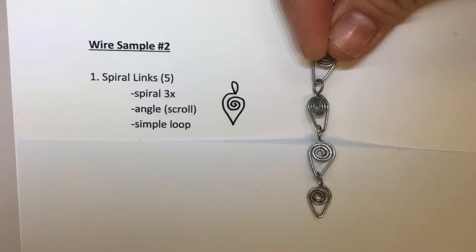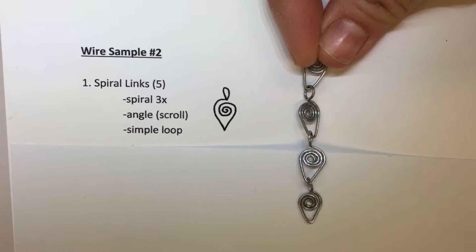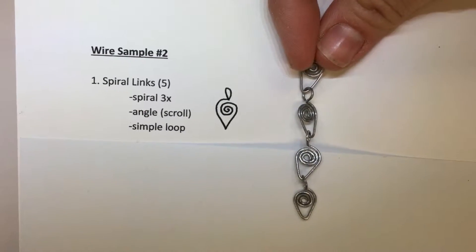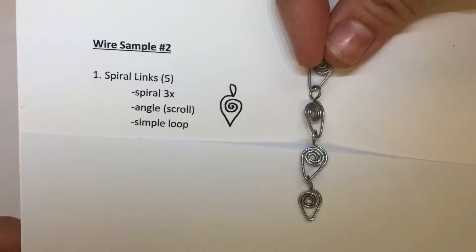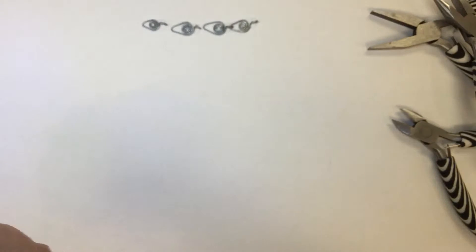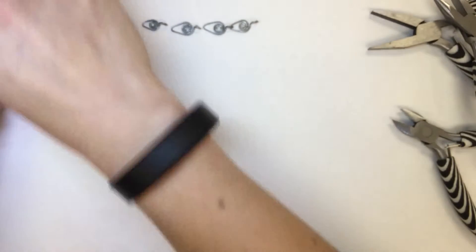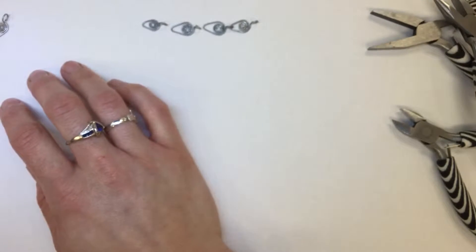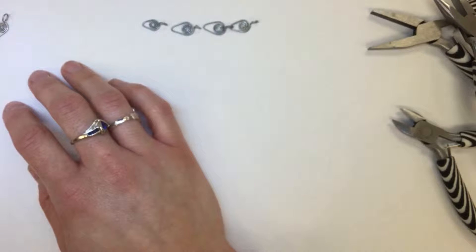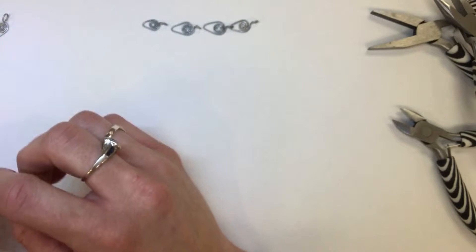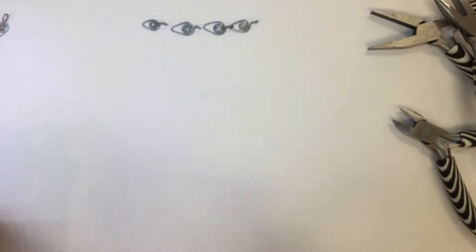Today I'm going to demonstrate the spiral links. You'll need to do five of these connected together on a simple loop bar. The spiral links are going to connect three of the forms that you've done before. We're going to do a spiral and angle similar to the scroll and then we'll add a simple loop.